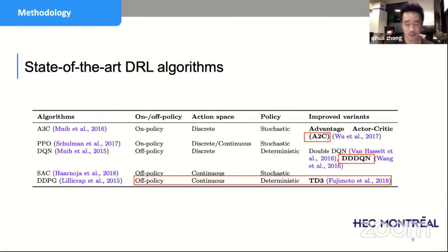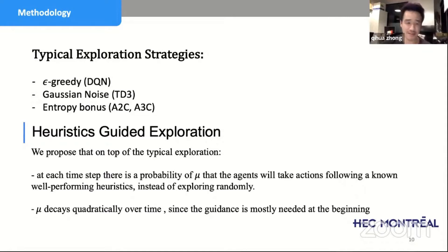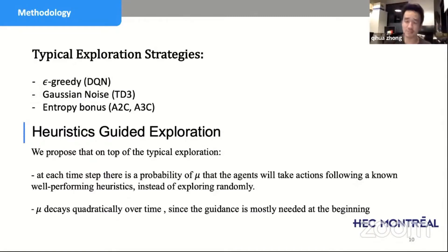On top of the three algorithms, we added extra components. We proposed a mechanism for exploration called heuristics-guided exploration. Reinforcement learning learns by trial and error, so exploration is very important. Traditional exploration strategies include epsilon-greedy — where with small probability epsilon the agent does random things — and Gaussian noise, where we take an intended action and add noise to explore around it, plus an entropy bonus that rewards more random behavior.